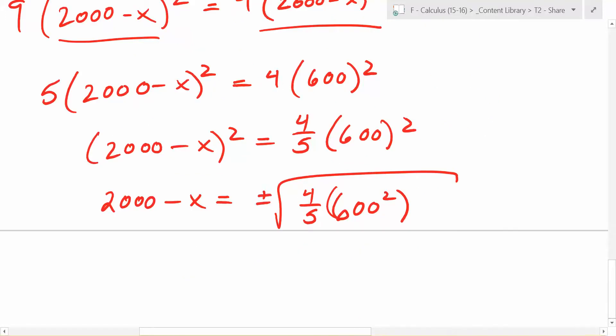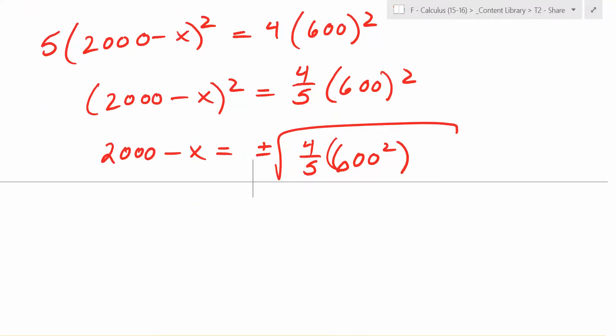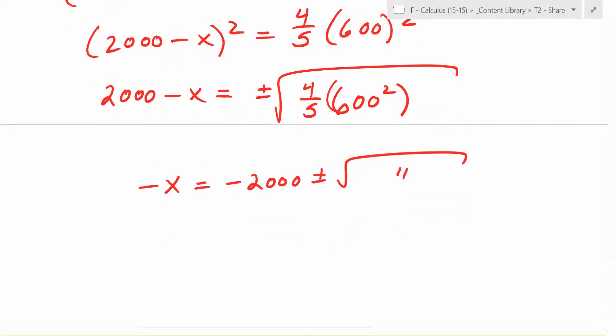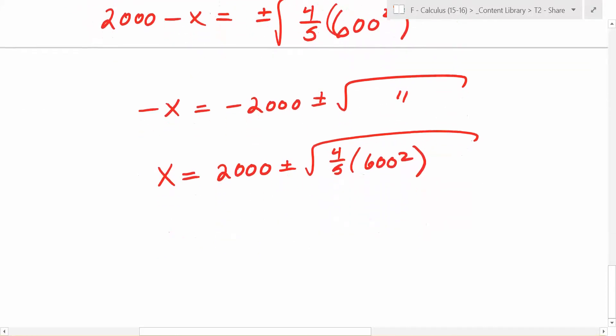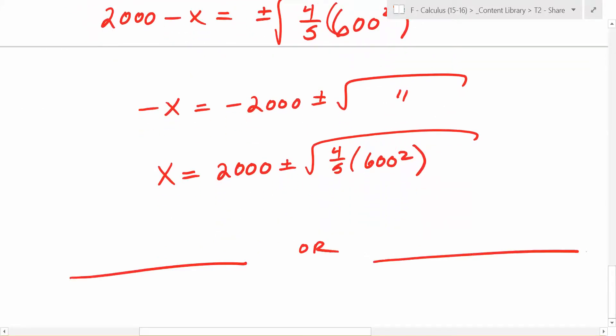So before we go on, plus or minus, everybody with me? So we have negative x is equal to negative two thousand plus or minus that thing. I'm just going to write it like that for a moment. What do we have to multiply everything by? So what do you get here? X is equal to? What happens when you multiply plus or minus by negative? You get minus plus, which is the same thing. So we get two thousand plus or minus the square root of four fifths times six hundred. What haven't we used yet? We haven't used a calculator yet. Do this on your calculator, please, and tell me what the two answers are. Everybody do this on their calculator.